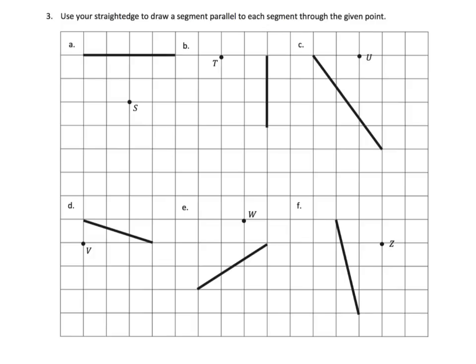Here we're going to be using that straight edge to draw a segment that is parallel to the segment through the given point. We've got this line right here and I'm supposed to draw a line parallel to it through S. That's pretty straightforward. B is also pretty straightforward because this one's vertical. The other one was horizontal.